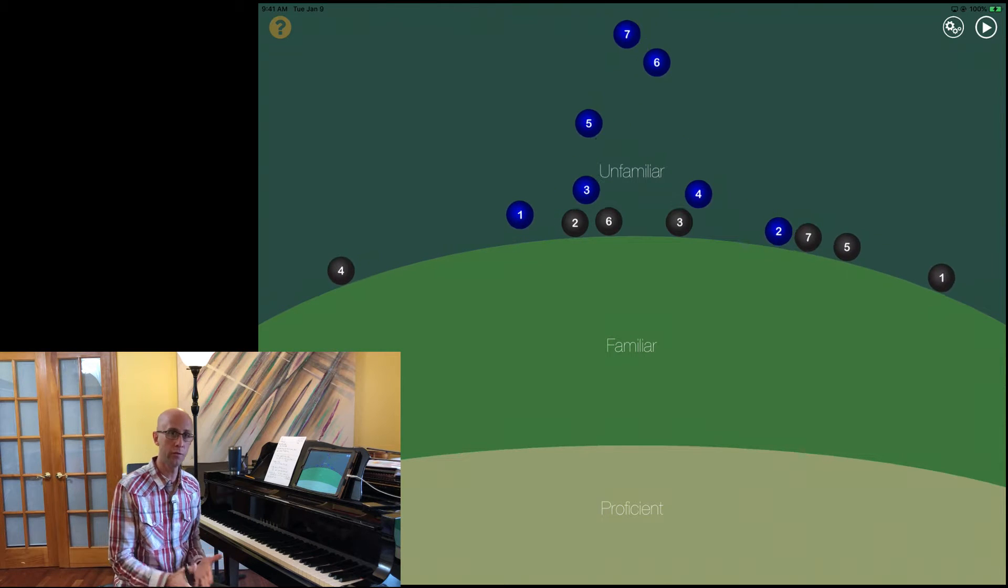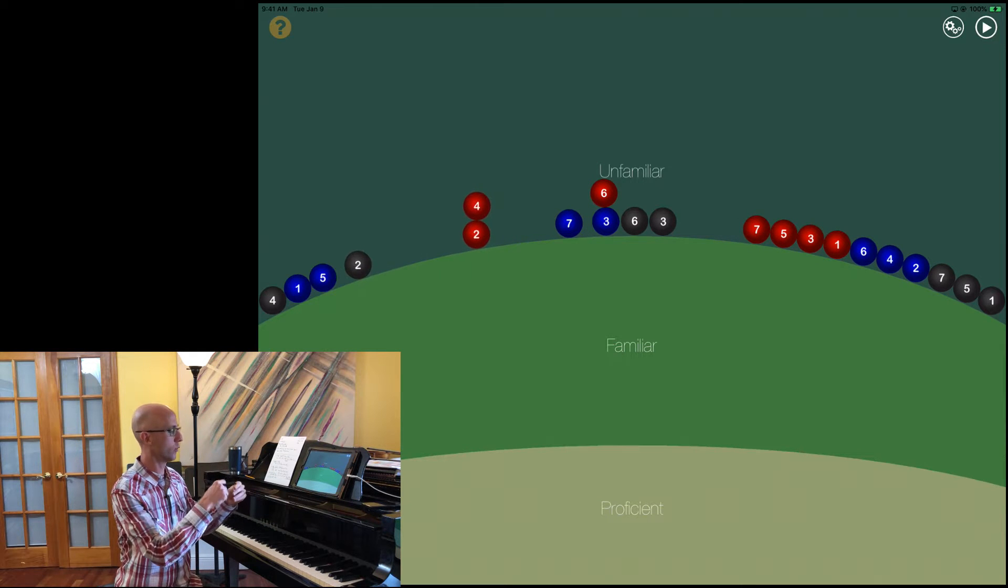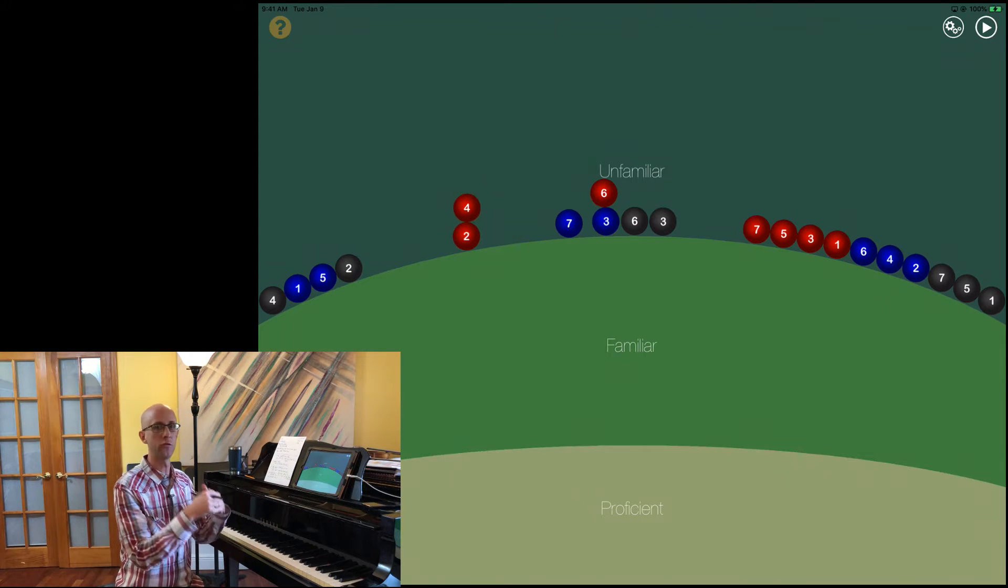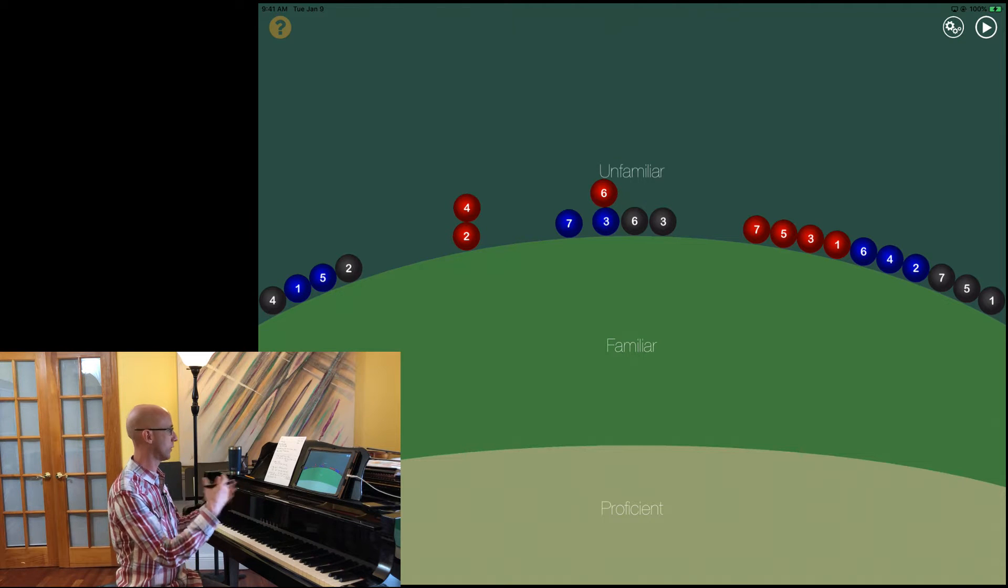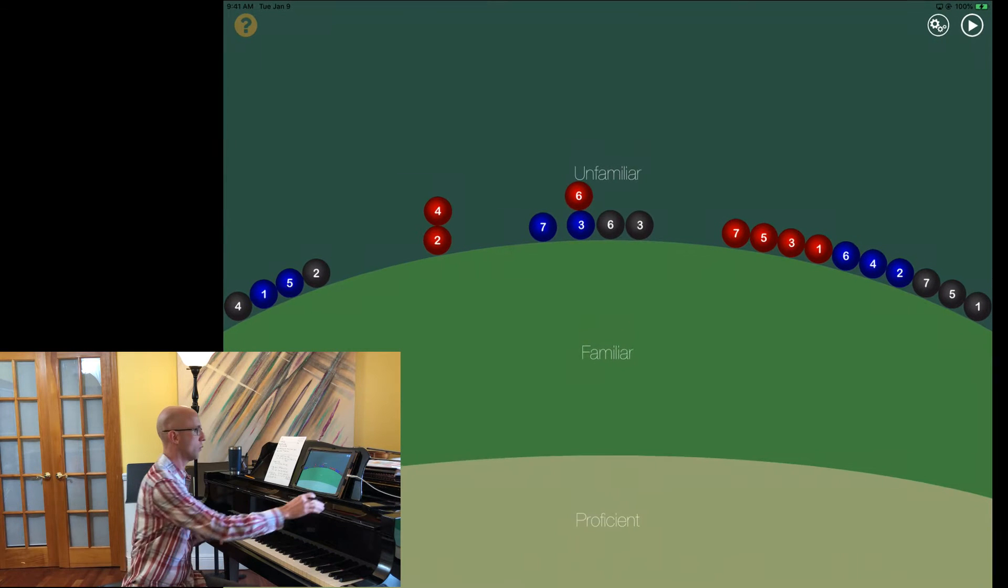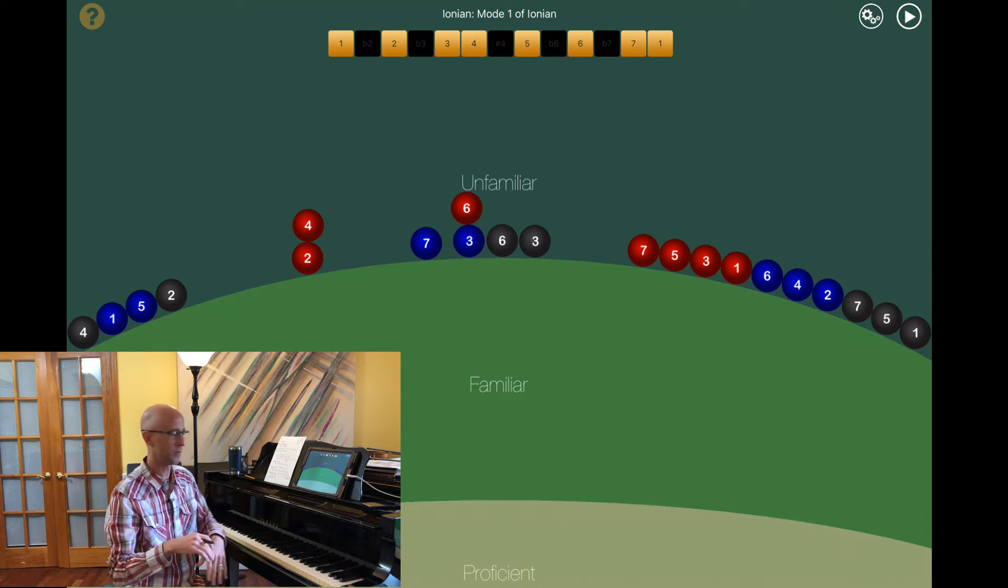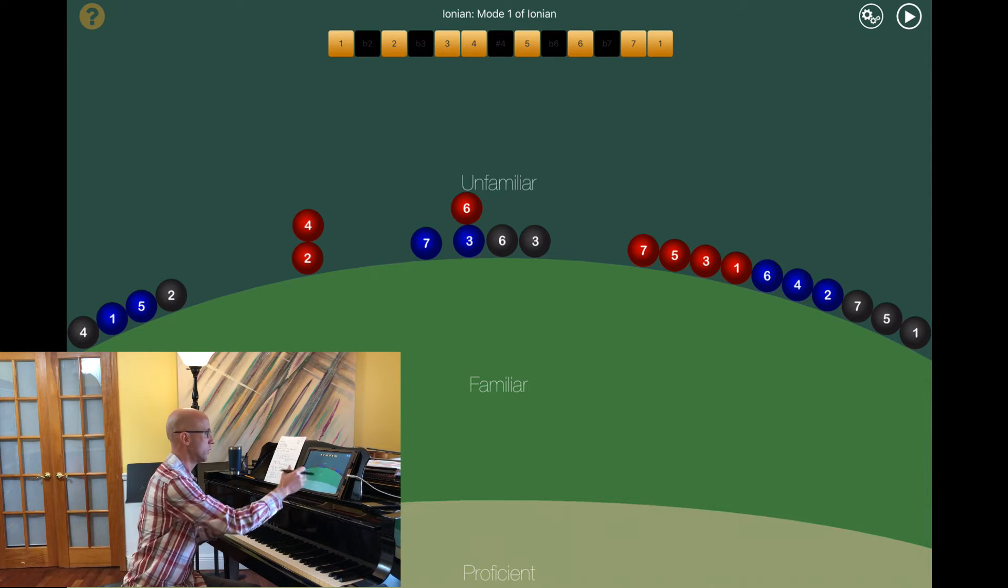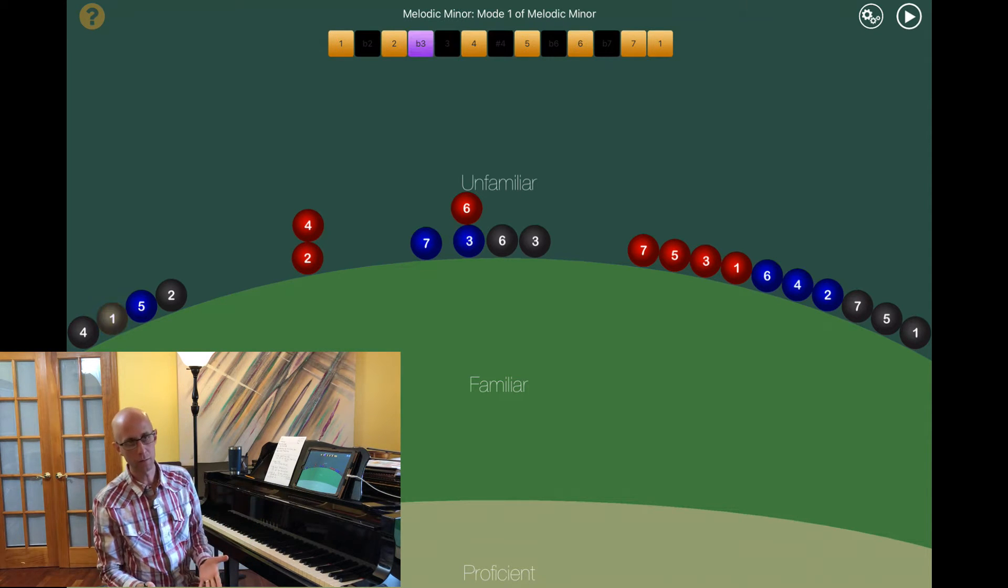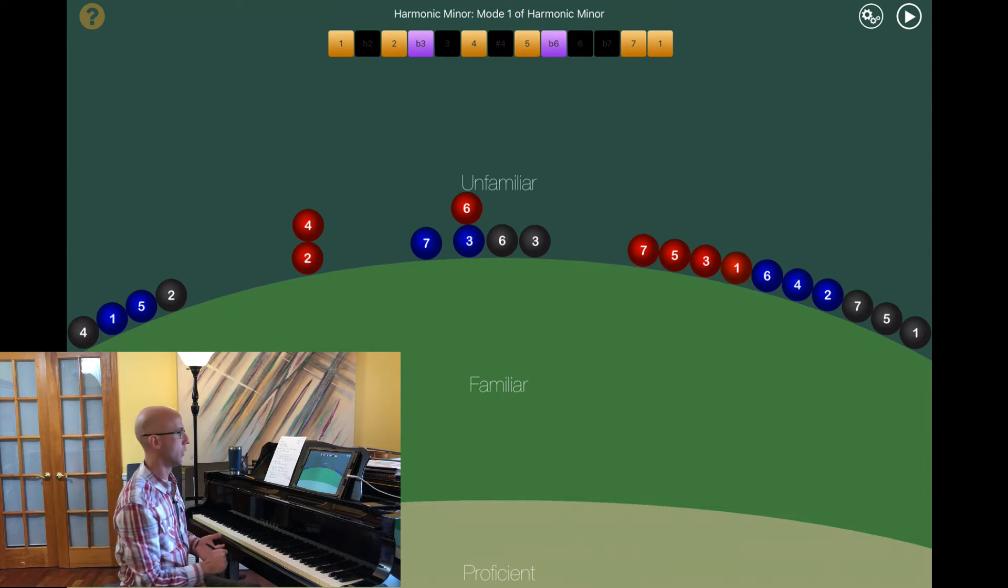A lot like Polytonus 2, you're hearing all of the source scales or the modes from the source scales play as the spheres drop in. We have these three different colored spheres representing the three source scales we mentioned earlier. The black ones are all the modes of Ionian, so just basic major scale and all the alterations that come from that: Dorian, Phrygian, Mixolydian, and so on. Our blue spheres are melodic minor and our red spheres are harmonic minor and all the modes that come from those three sources.